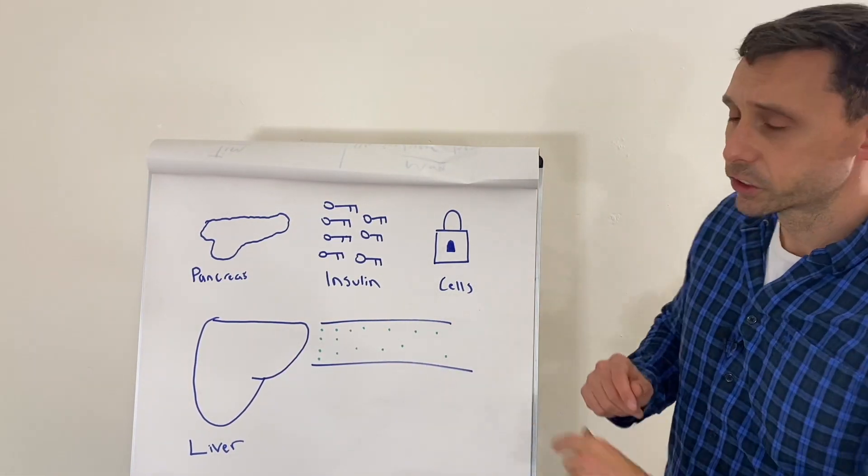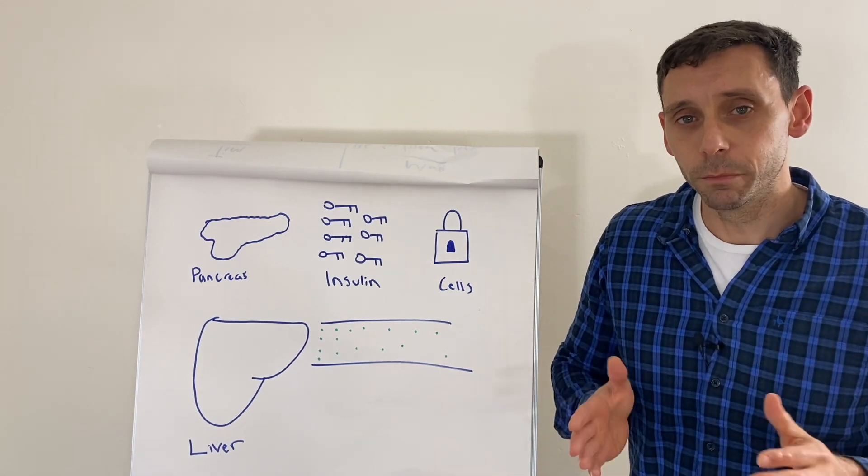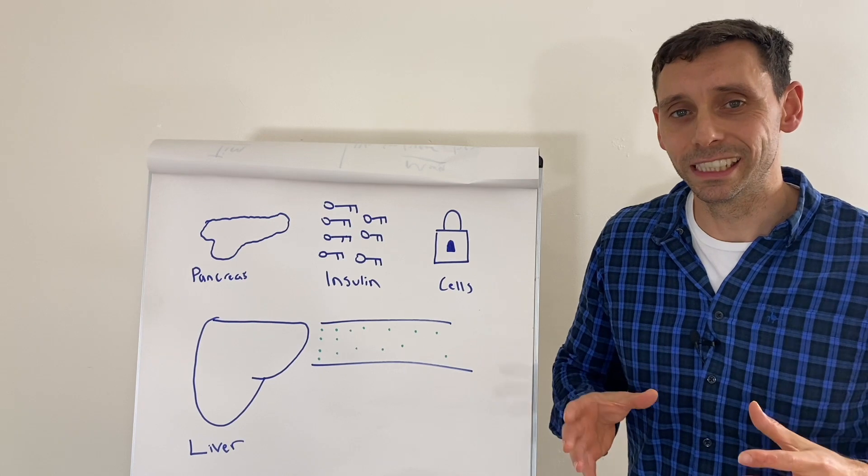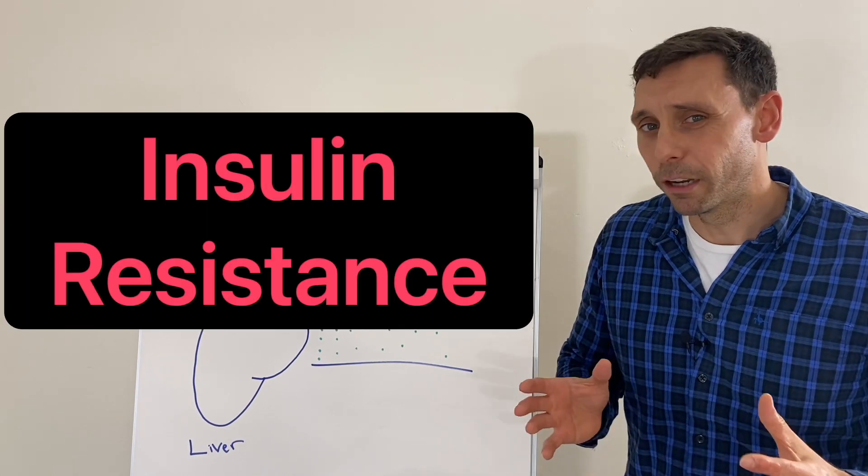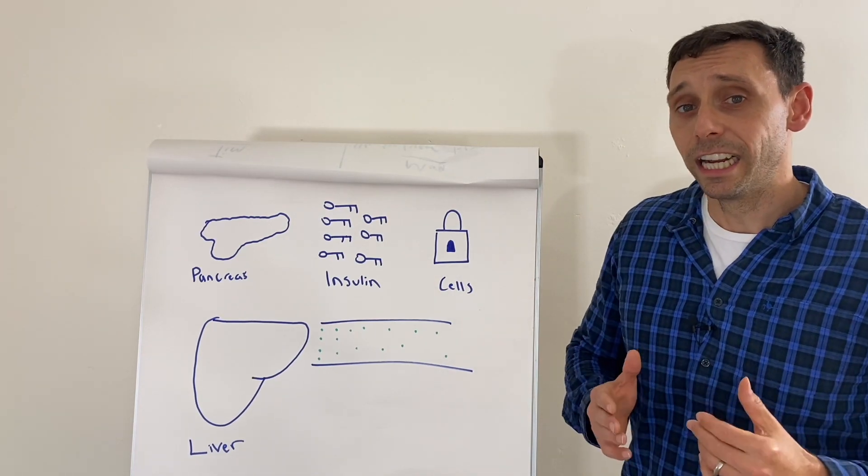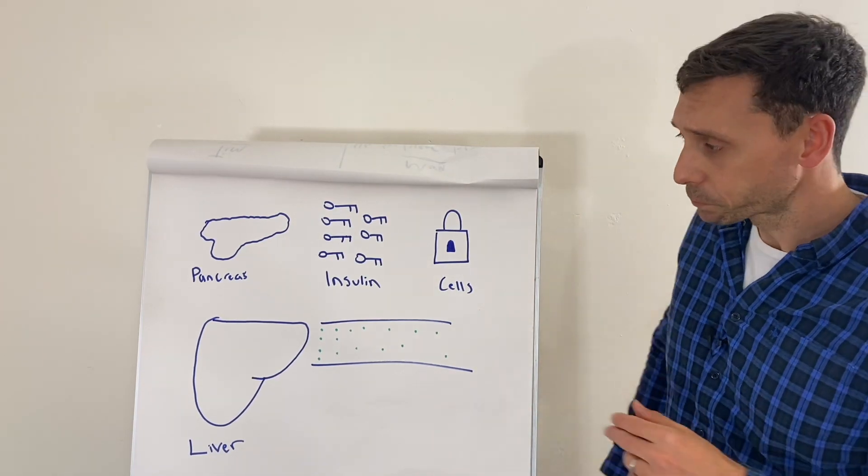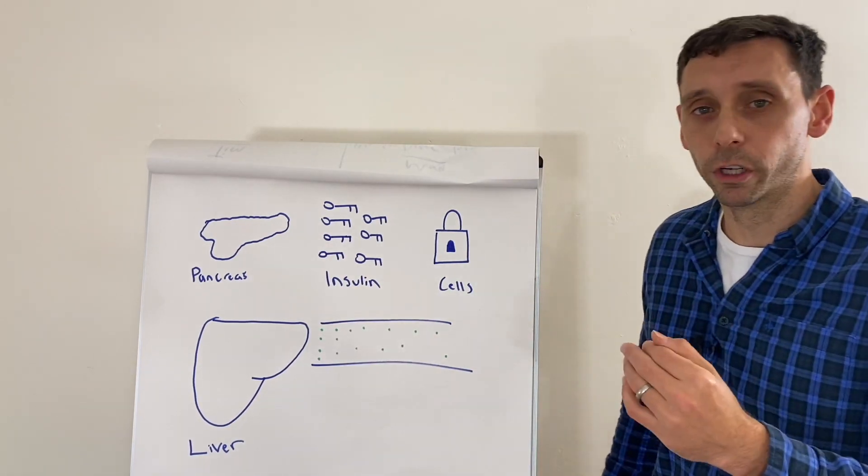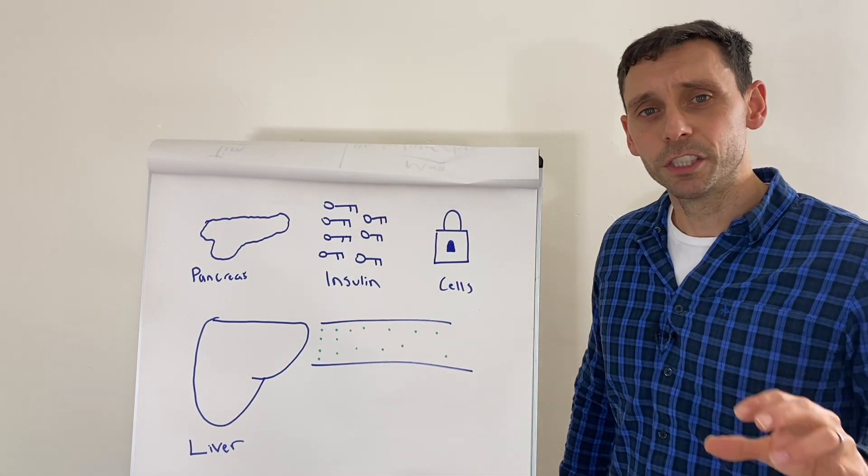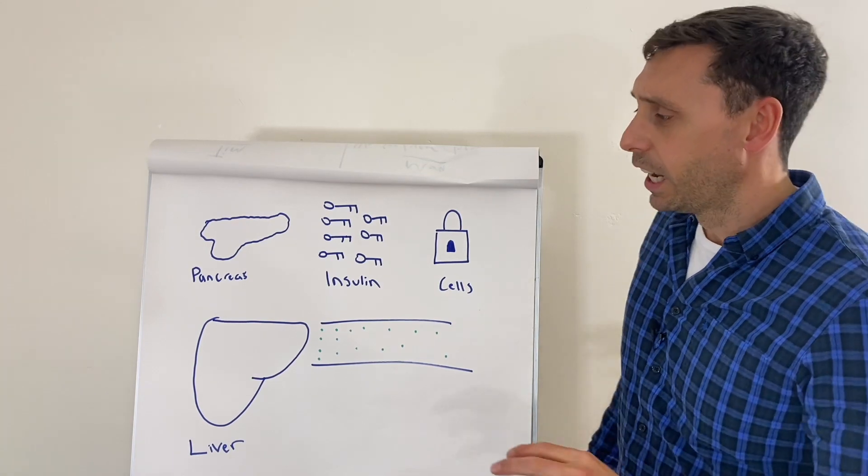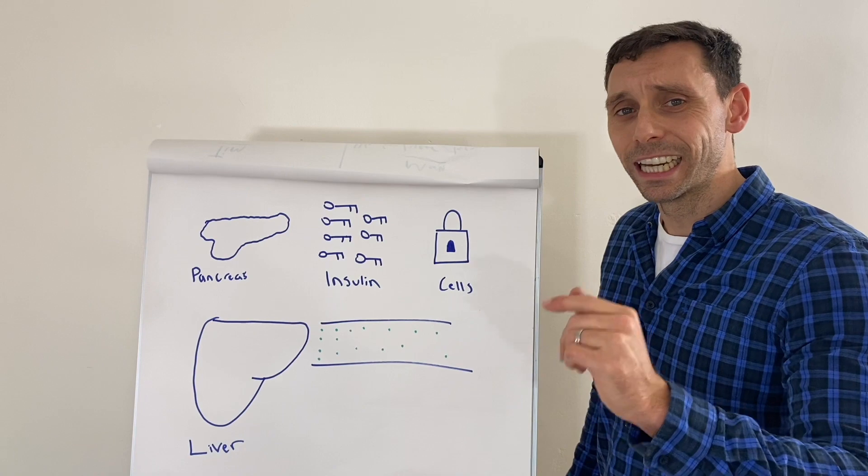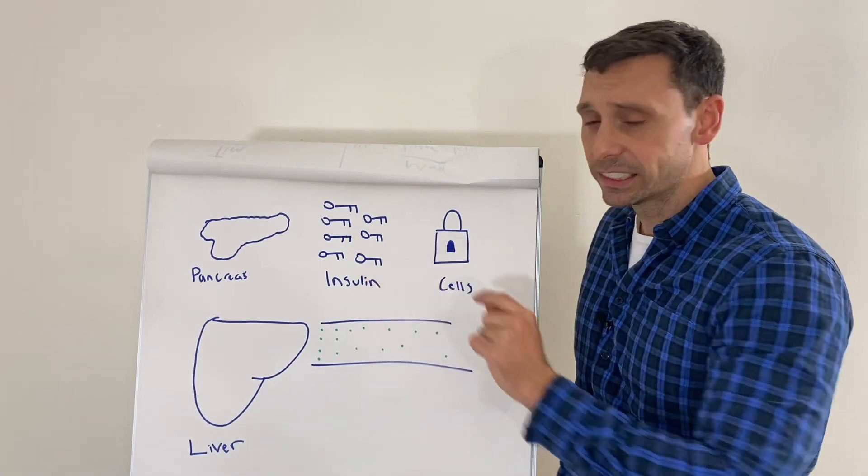So let's start with the pancreas. So what happens with type 2 diabetes is your body starts to develop something called insulin resistance. You might have heard that term. Now let me just explain what's going on in the body, in your bodies, and then we'll start to loop back to that term. So the pancreas is an organ and it has two functions. One, it helps you to digest food, which is one of its primary functions. And another small part, a very small part of its function is dedicated to releasing hormones. One of which is called insulin.